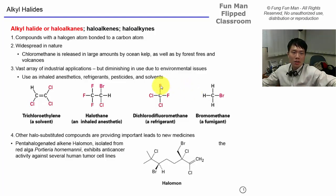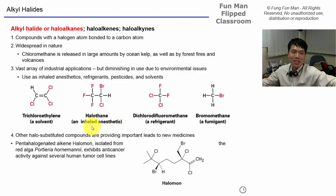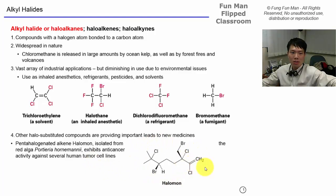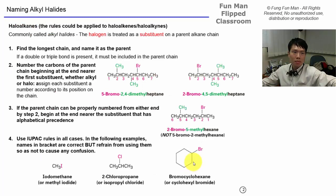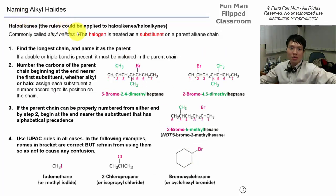In the past we used them as inhaled anesthetics, refrigerants, pesticides, and solvents. Trichloroethylene was used as a solvent; halothane is an inhaled anesthetic; dichlorodifluoromethane (a CFC) is found in fridges; and bromomethane is a fumigant. There are other halo compounds that provide important steps in the synthesis of new drugs. This molecule called halomon, isolated from the red alga Portieria hornemannii, exhibits anti-cancer activity against several human tumor cell lines. In fact, most cancer-fighting drugs on the market contain halogens.